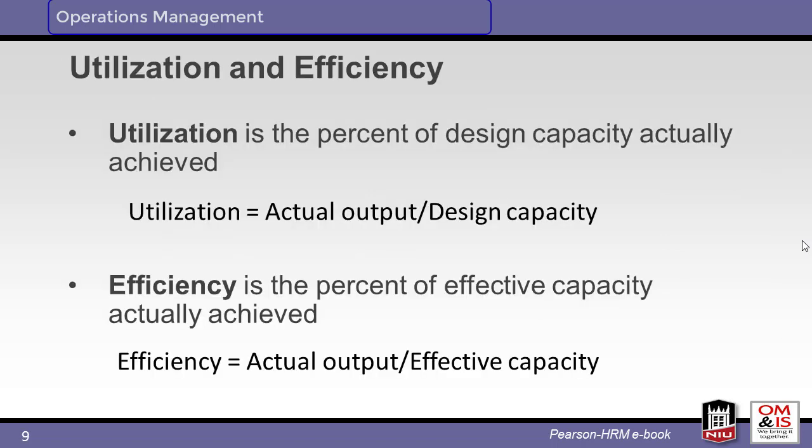Utilization is the ratio of actual output to design capacity, while efficiency is the ratio of actual output to effective capacity. Note that both are based on actual output, not actual capacity.